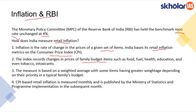This even includes items like tobacco and intoxicants. This measure is based on a weighted average — not all items are given the same weightage. Items have different priorities and accordingly the weightage is given. For example, if food is a priority it would have more weightage over other things like tobacco and intoxicants.